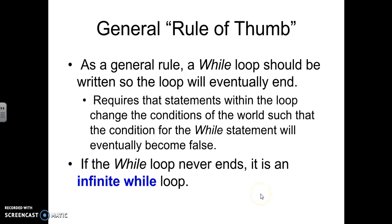Now, the general rule of thumb when you're writing a while loop. As a general rule, a while loop should be written so that the loop will eventually end. It has to if it's going to be a while. This requires that statements within the loop change the conditions of the world such that the condition for the while statement will eventually become false. When it does, the while ends. If the while loop never ends, then it becomes an infinite loop and we don't need to use a while for that.